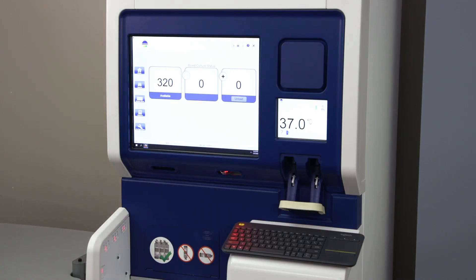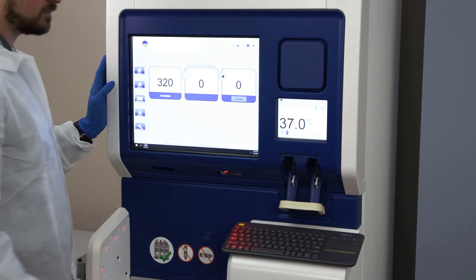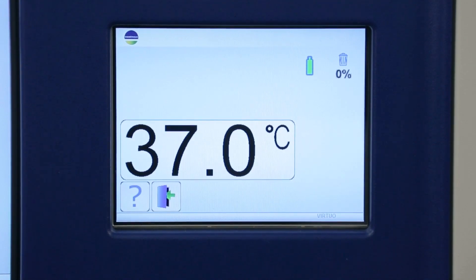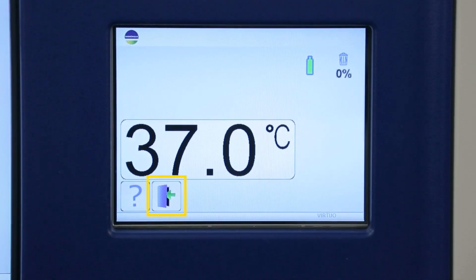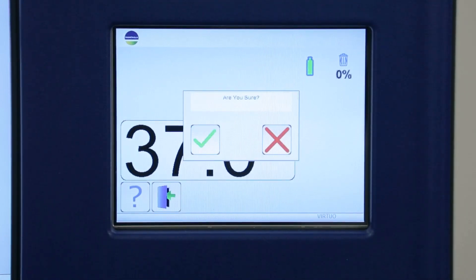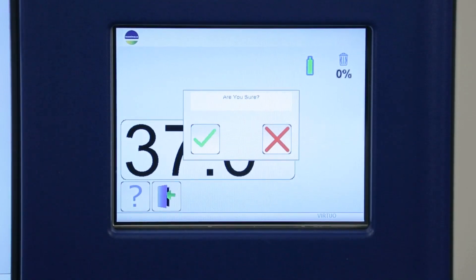Opening the BACT/ALERT VIRTUO door. In order to open the instrument door properly, the user must request to open the BACT/ALERT VIRTUO instrument door. This is done by selecting the door open request icon on the small display screen. This will allow the instrument to move the robot to a safe, ready position.